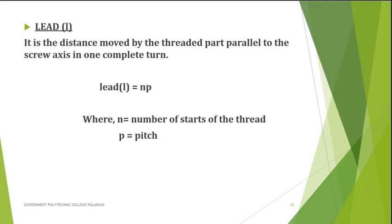The next term is lead. Lead is the distance moved by the threaded part parallel to the screw axis in one complete turn. If you insert a threaded bolt into a hole and rotate it one complete turn, the distance it moves is the lead. The formula is: lead equals n times p, where n is the number of starts of the thread and p is the pitch.